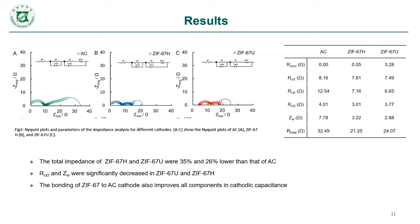In the abiotic LSV plot, a lower cathode reduction potential in the negative direction means easier onset of the oxygen reduction reaction. Figure 3 and the associated table show impedance analysis data for different cathodes. Panels A to C are Nyquist plots. The total impedance decreased by 35% for ZIF-67H and by 26% for ZIF-67U compared to the activated carbon cathode. Both charge transfer resistance and diffusion resistance decreased significantly. Bonding the material to activated carbon also improved cathode capacitance.